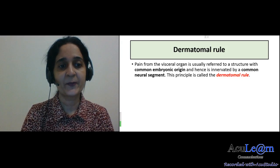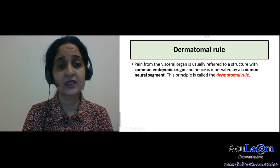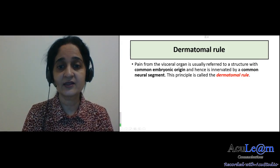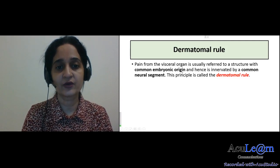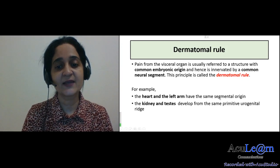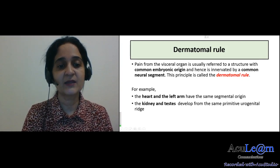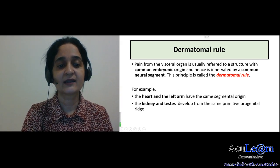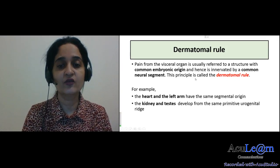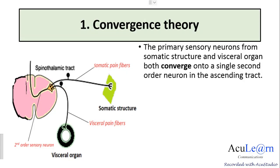Now we move on to the term called the dermatomal rule. Pain from the visceral organ is usually referred to a structure with common embryonic origin, and hence is innervated by a common neural segment. This principle is called the dermatomal rule. For example, the heart and the left arm have the same segmental origin, which is why cardiac ischemia pain is felt in the left arm. The kidney and testis also develop from the same primitive urogenital ridge, so they are innervated by a common neural segment.